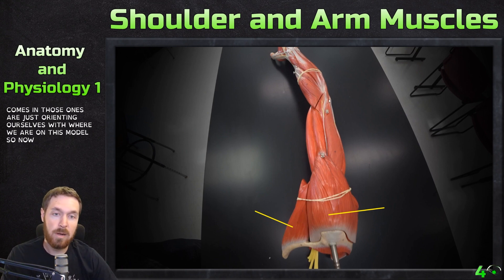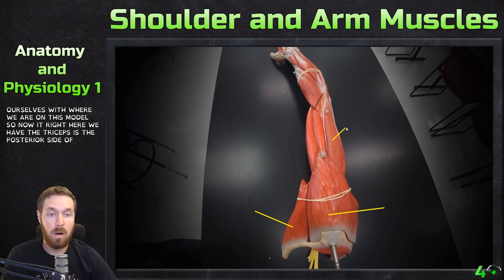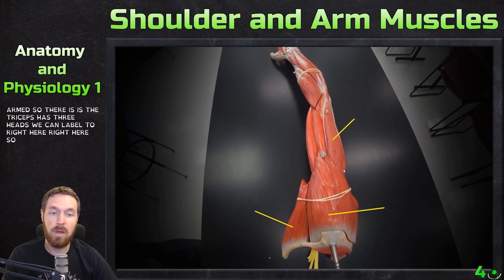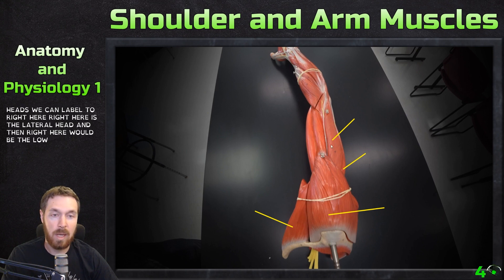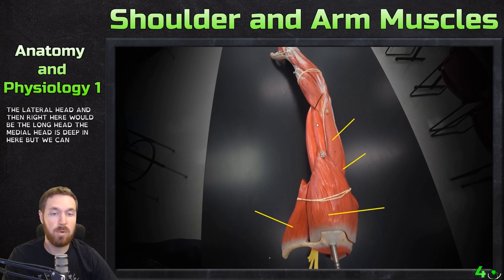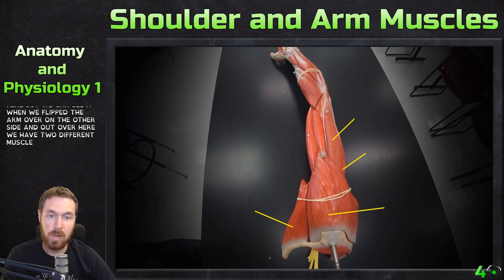Now right here we have the triceps — this is the posterior side of our arm. The triceps has three heads; we can label two right here: here's the lateral head, and right here would be the long head. The medial head is deep in here, but we can see it when we flip the arm over to the other side.